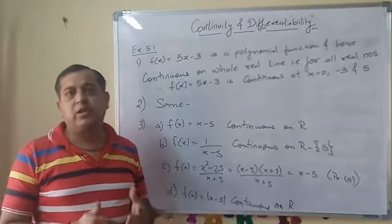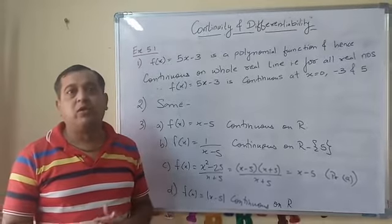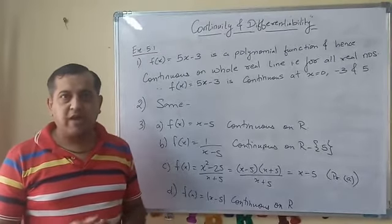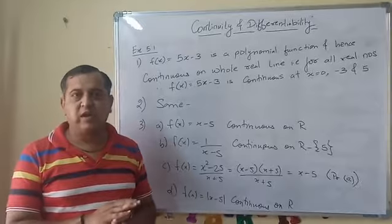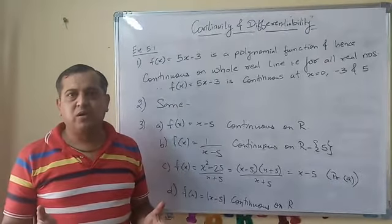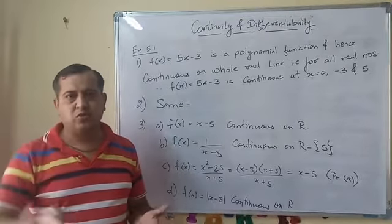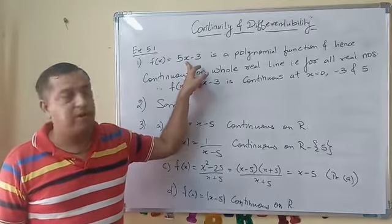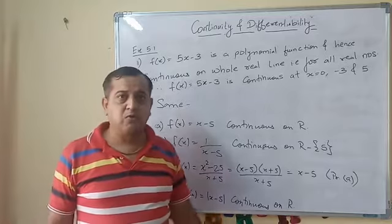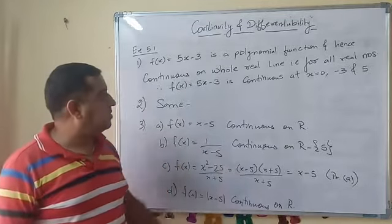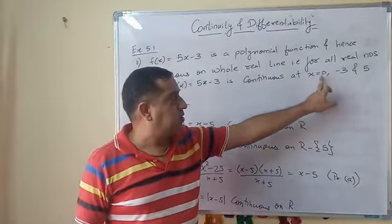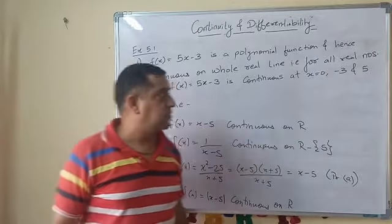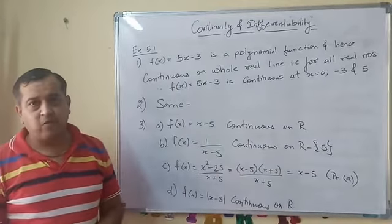equation of first degree in y and x, so it will represent a line. When you draw it, it never breaks, continuous. So it is a continuous function. Moreover, it is a polynomial function of degree 1 and hence it is continuous for all real numbers, and hence it is continuous for given points x = 0, x = -3, and x = 5.